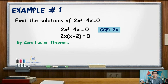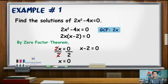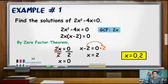Applying the zero factor theorem: 2x equals 0, and x minus 2 equals 0. From the first equation, x equals 0. On the other equation, transposing negative 2 to the right side gives an x value of positive 2. Hence, the solutions of 2x squared minus 4x equals 0 are 0 and positive 2.